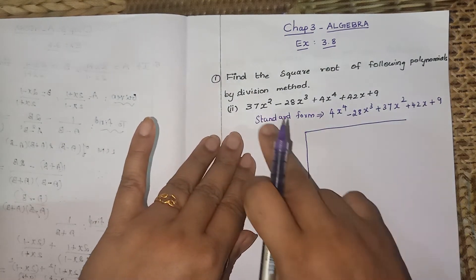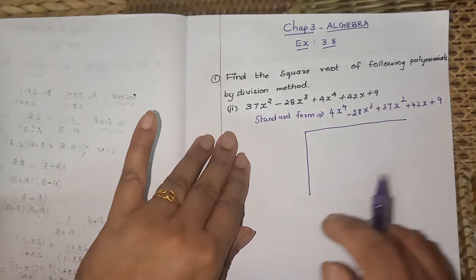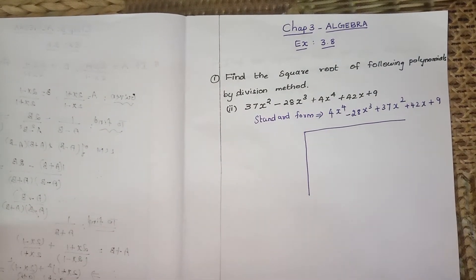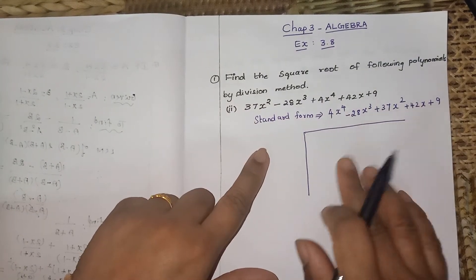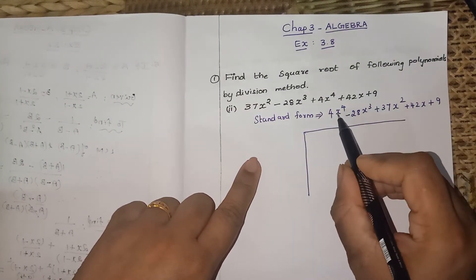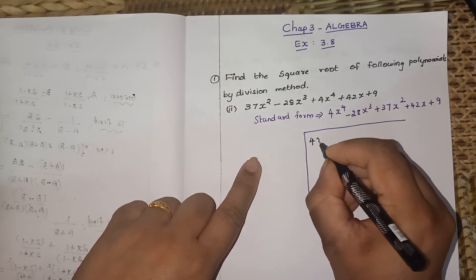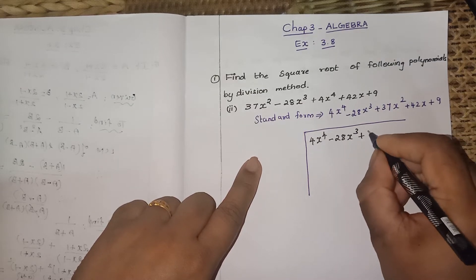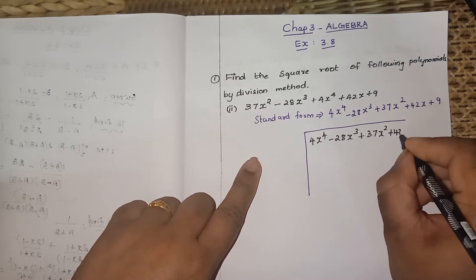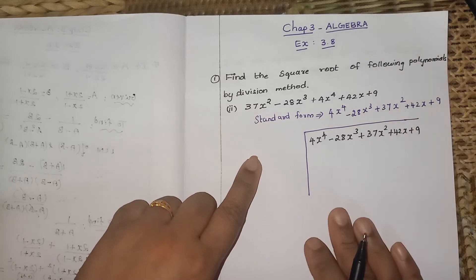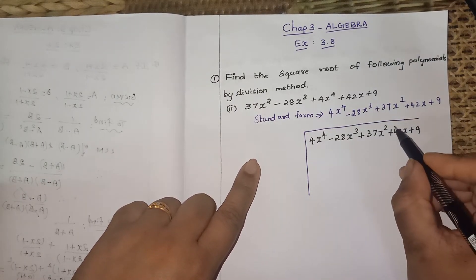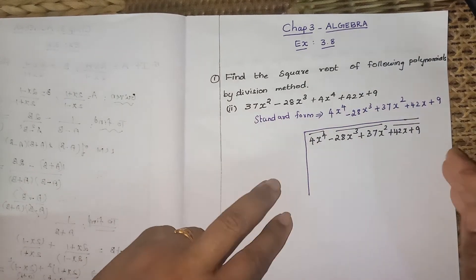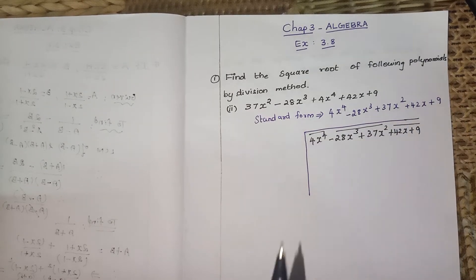Now we're going to divide. Write the terms inside: 4x⁴ minus 28x³ plus 37x² plus 42x plus 9. First, pair up the terms from the right side: two terms, two terms, and one alone.